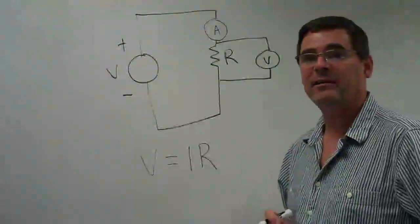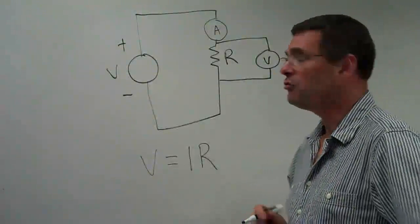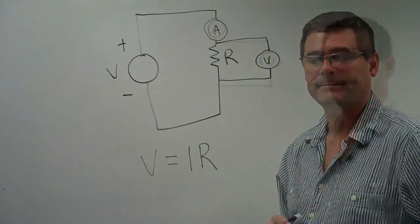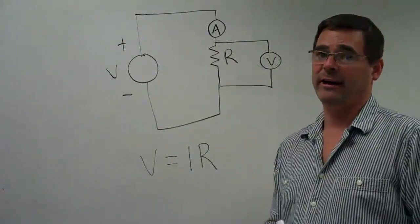to measure current, my ammeter is placed in series. To measure voltage, my voltmeter is placed in parallel. This is the schematic drawing of my setup.